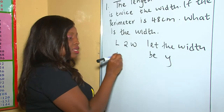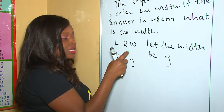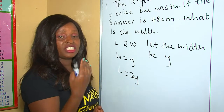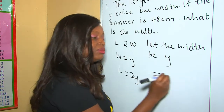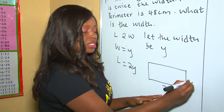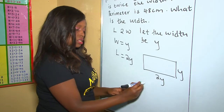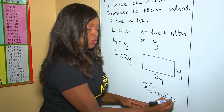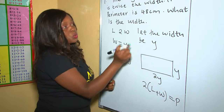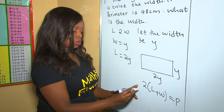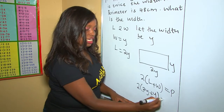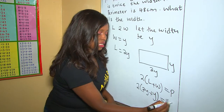Therefore our width is y, and our length is twice the width, which is 2y. Now we use the formula for the perimeter of a rectangle: two brackets (l + w). Our length is 2y and our width is y. We put the length and width into the formula: 2(2y + y) should equal the perimeter, which is 48 centimeters.